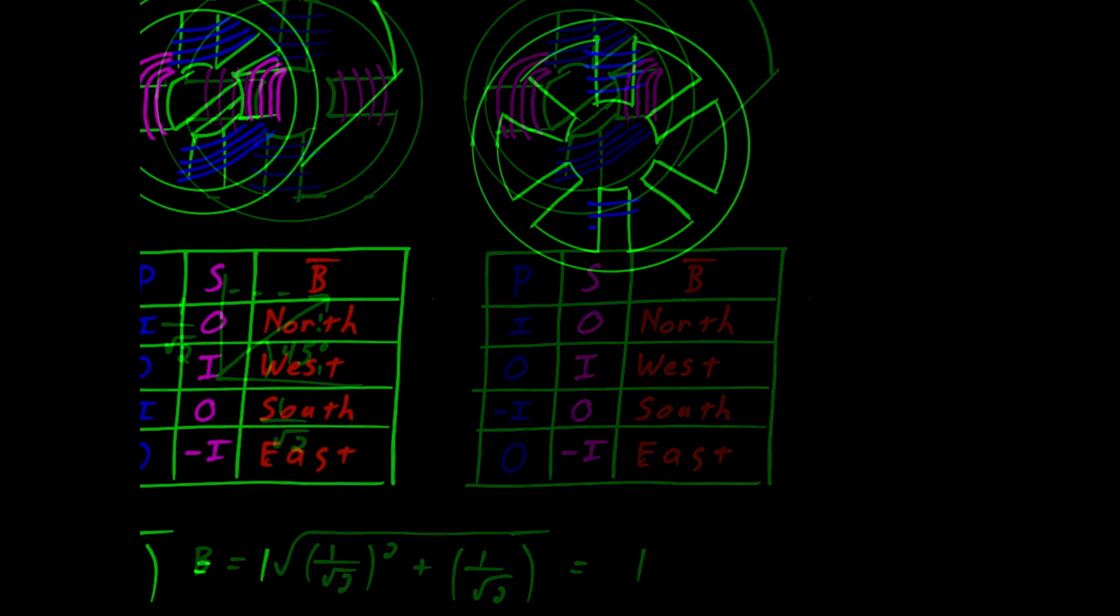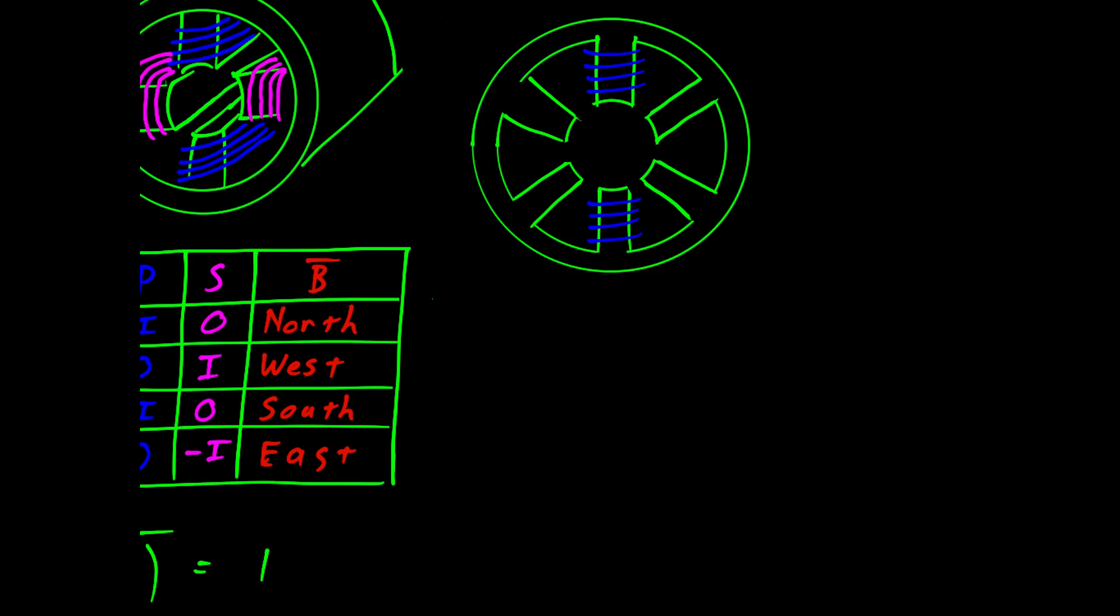A stator for a three-phase motor would look like this. See that we have three sets of coils. And each set of coils is mechanically offset by 60 degrees. Just like the two-phase motor, a three-phase motor will make a constant amplitude rotating magnetic vector.